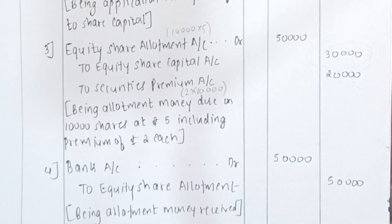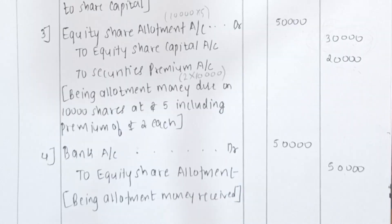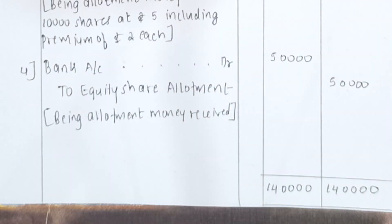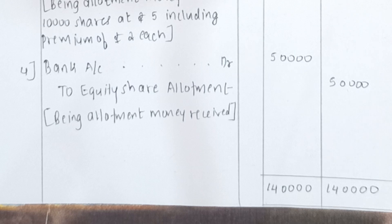Use whichever method you find easier. Entry 4: Bank Account debit to Equity Share Allotment Account — Rs. 50,000 — being allotment money received. After the fourth entry, total the debit and credit sides: both sides come to Rs. 1,40,000. This is how you solve a problem whenever there is securities premium.